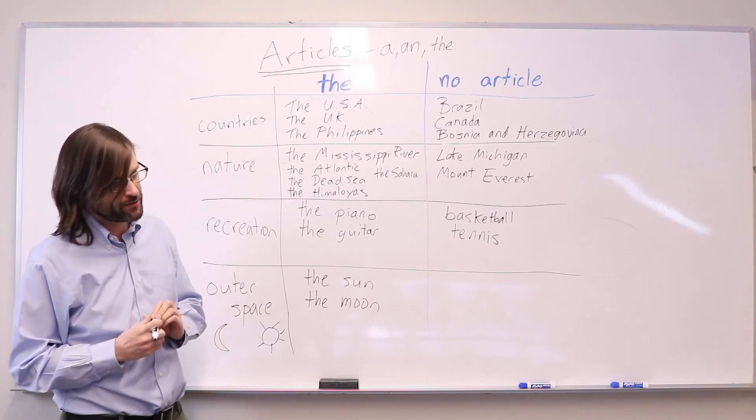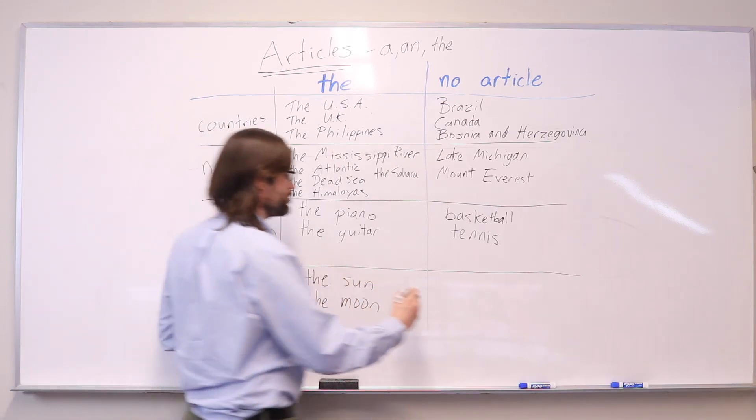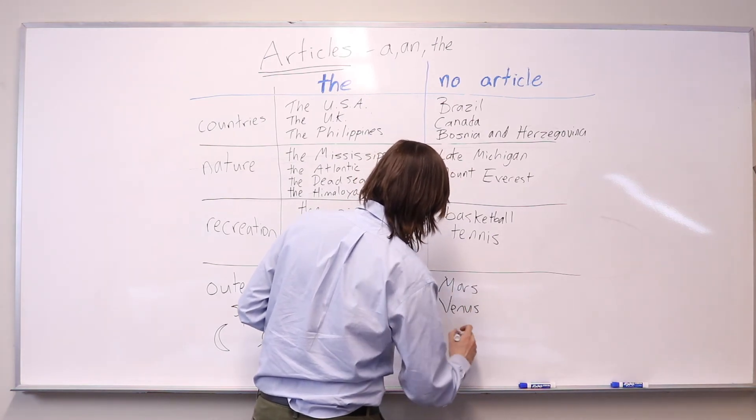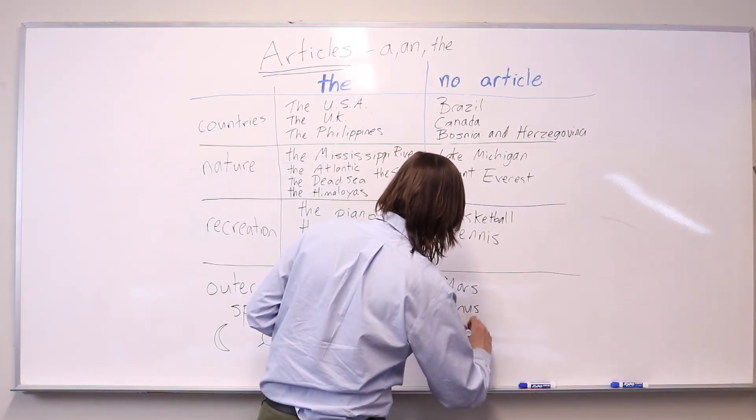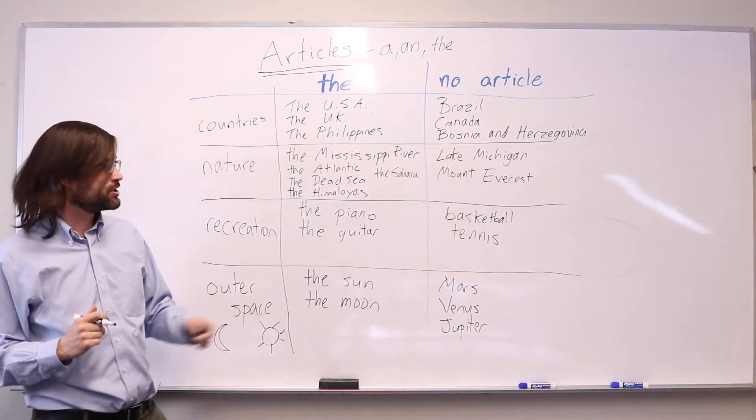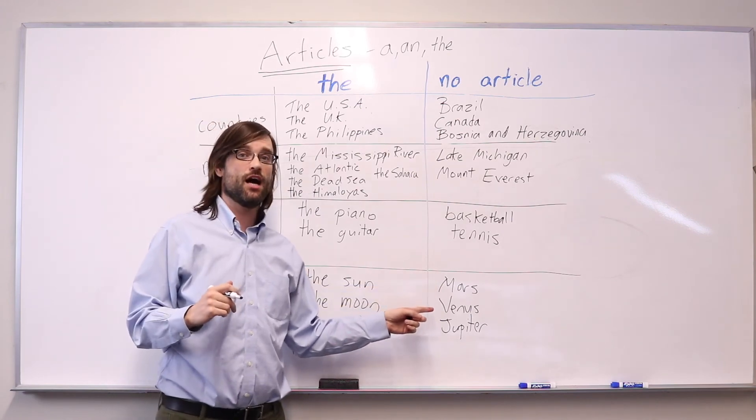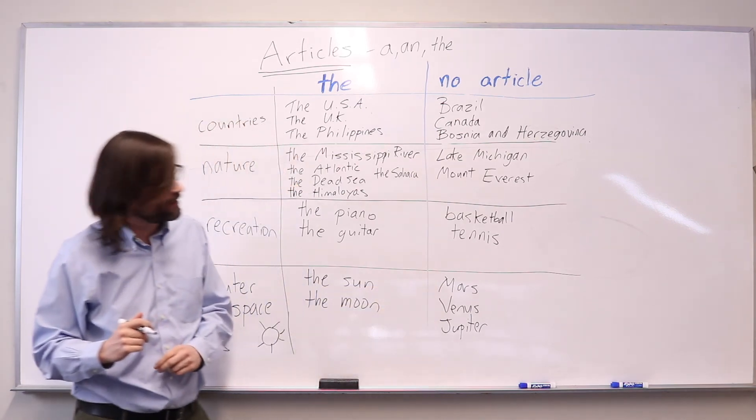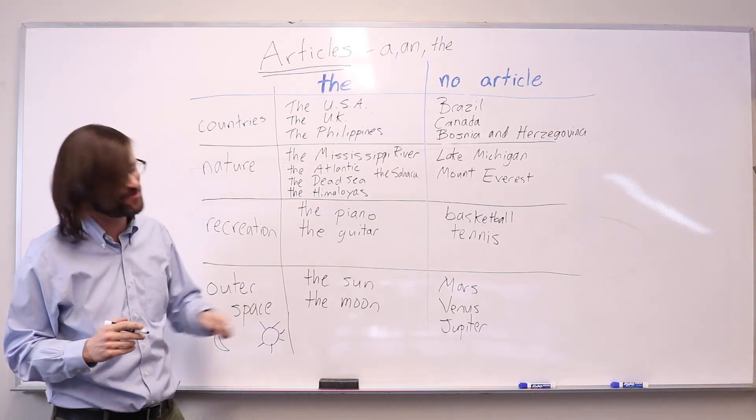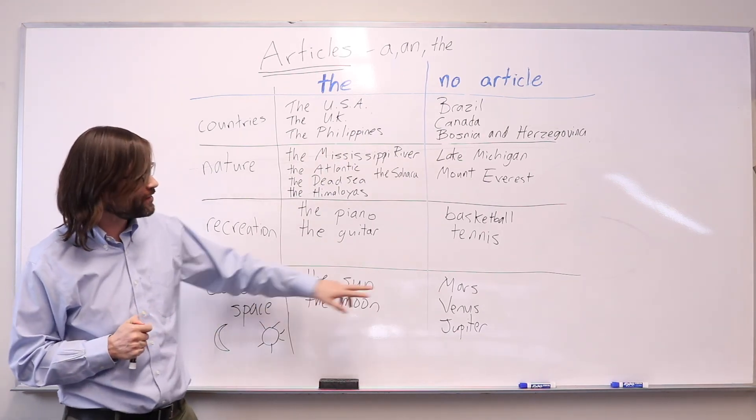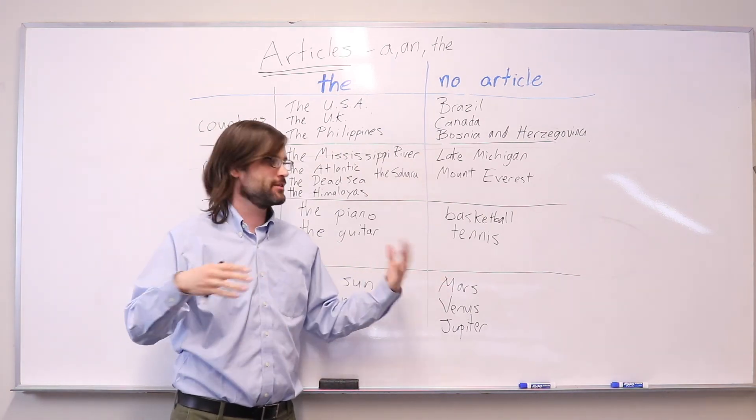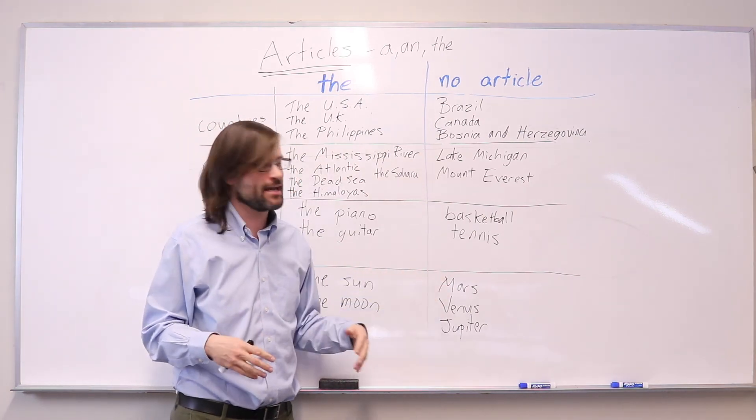When we talk about other planets, however, we use no article. Mars, Venus, Jupiter. So if you know your mythology, these are also the names of gods in Roman or Greek mythology. I forget which one is the planets. So you can think of them as names. The planets are names of these gods. So names are capitalized. Names do not use articles.